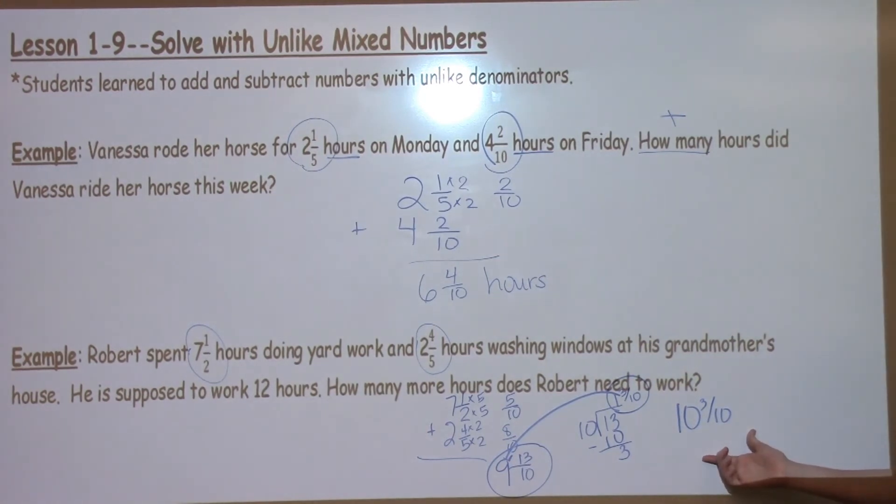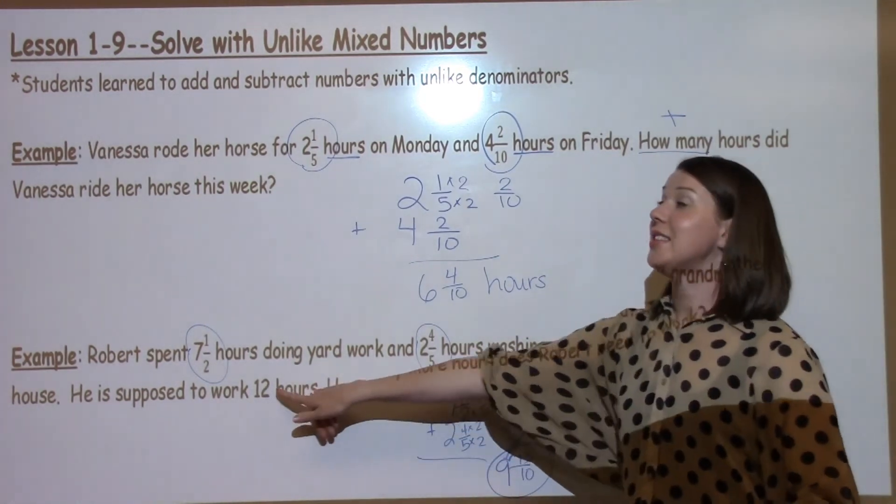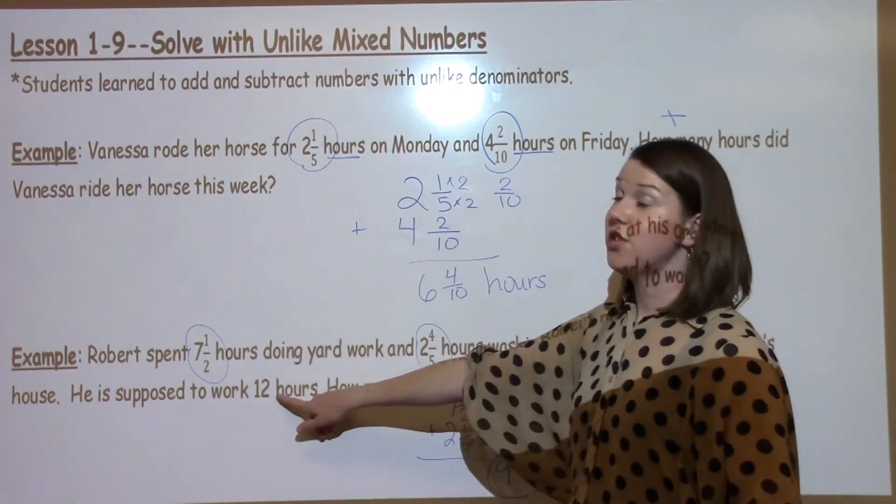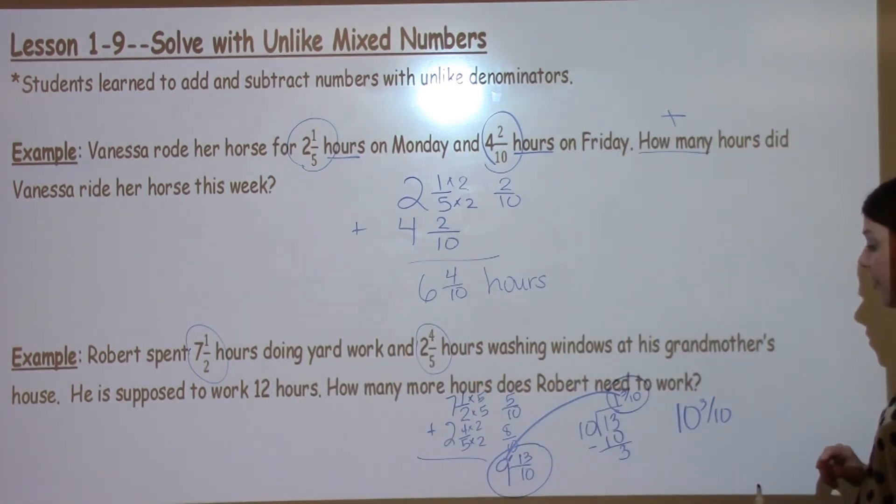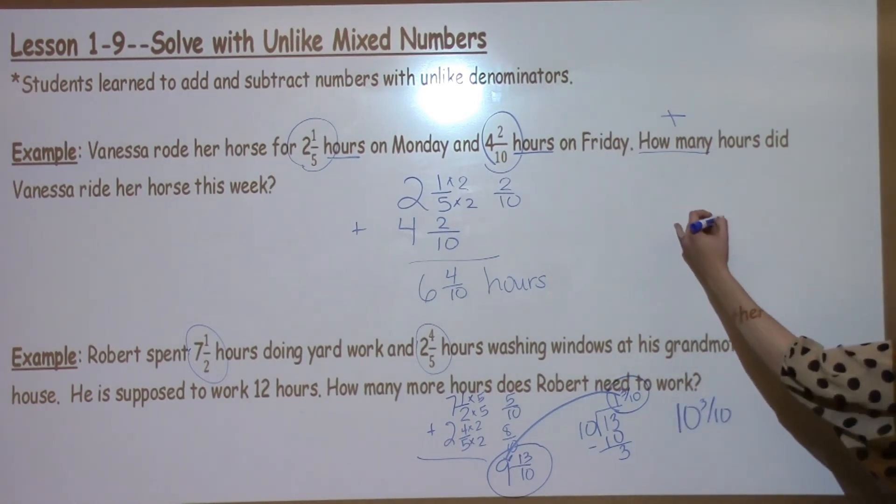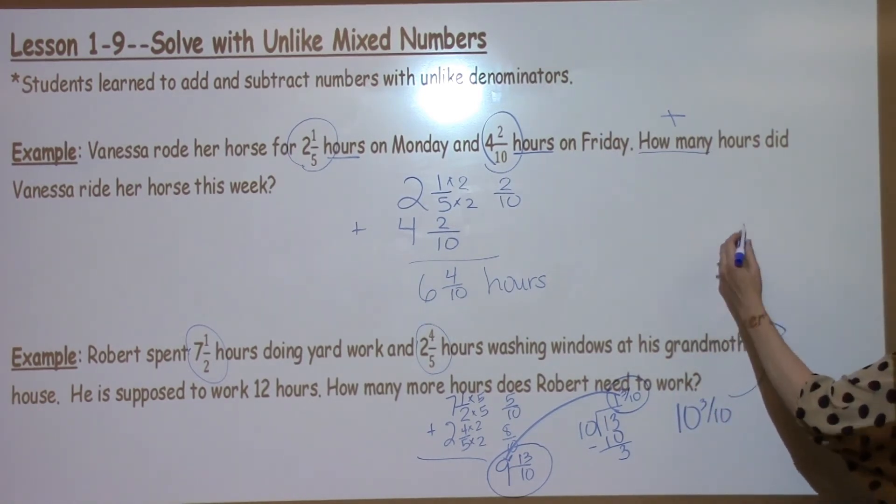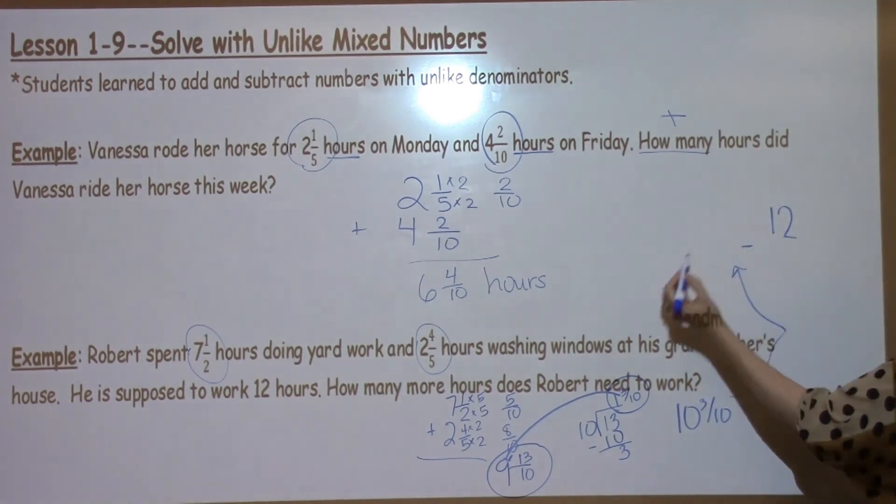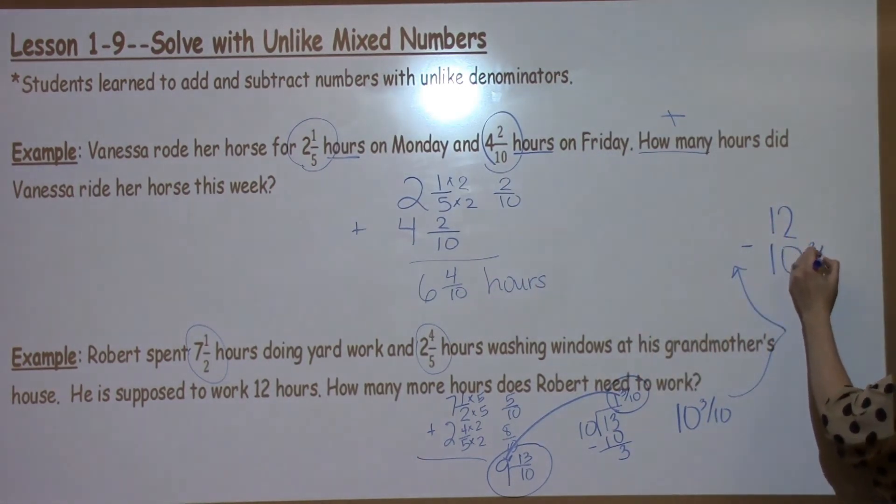But the question doesn't ask me how many hours he's worked. It asks me how many more does he need to work. So I need to take my 12 hours minus my 10 and 3 tenths. So I'm going to go up here and work a little bit more so I have more room. So I'm going to take my 12 minus my 10 and 3 tenths.